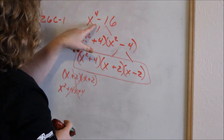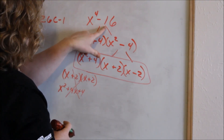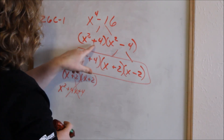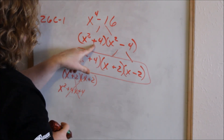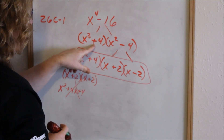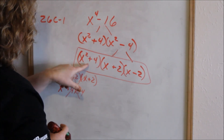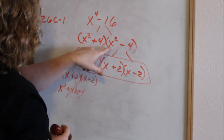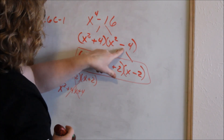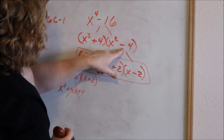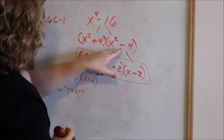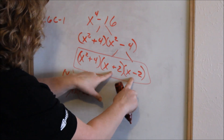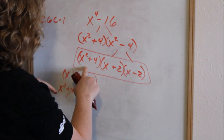So again, this was a difference of two squares. We factored it. The factor that is positive — x squared plus 4 — cannot factor any more, so it gets carried along. But x squared minus 4 is another difference of two squares and it factors down further. So these are your final factors.